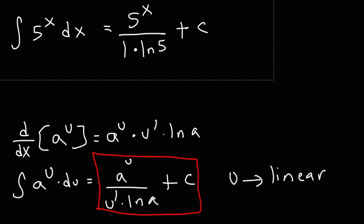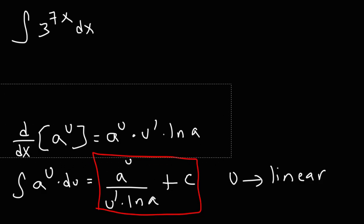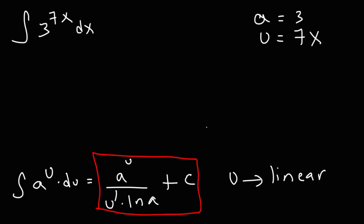Let's try another example. Find the indefinite integral of 3 raised to the 7x. For this problem, we're going to identify each letter. So a in this example is 3, and u is the exponent 7x. To use this formula, all we need to find is u prime — the derivative of 7x, which is 7.